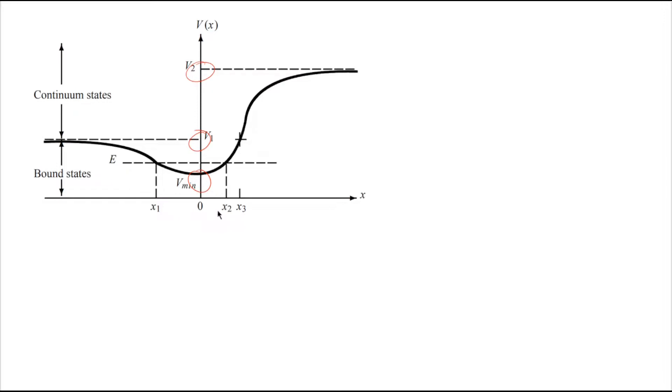Bound states occur whenever the particle cannot move to infinity—that is, it is confined at all energies to move within a finite and limited region of space. As you can see in this curve, for energy E less than V1, bound states occur.